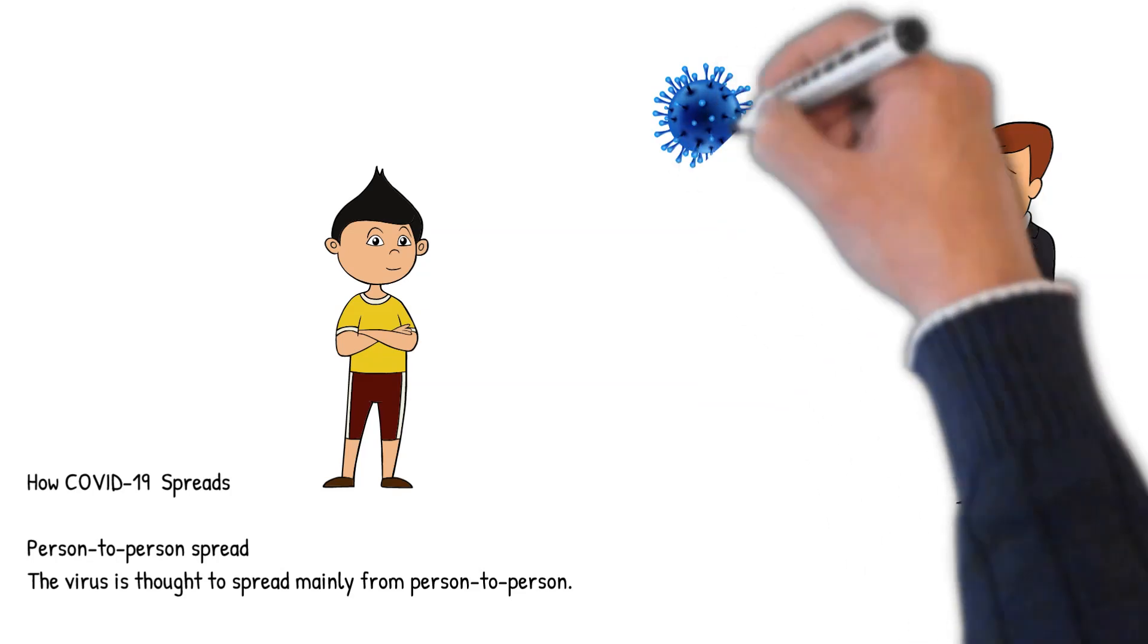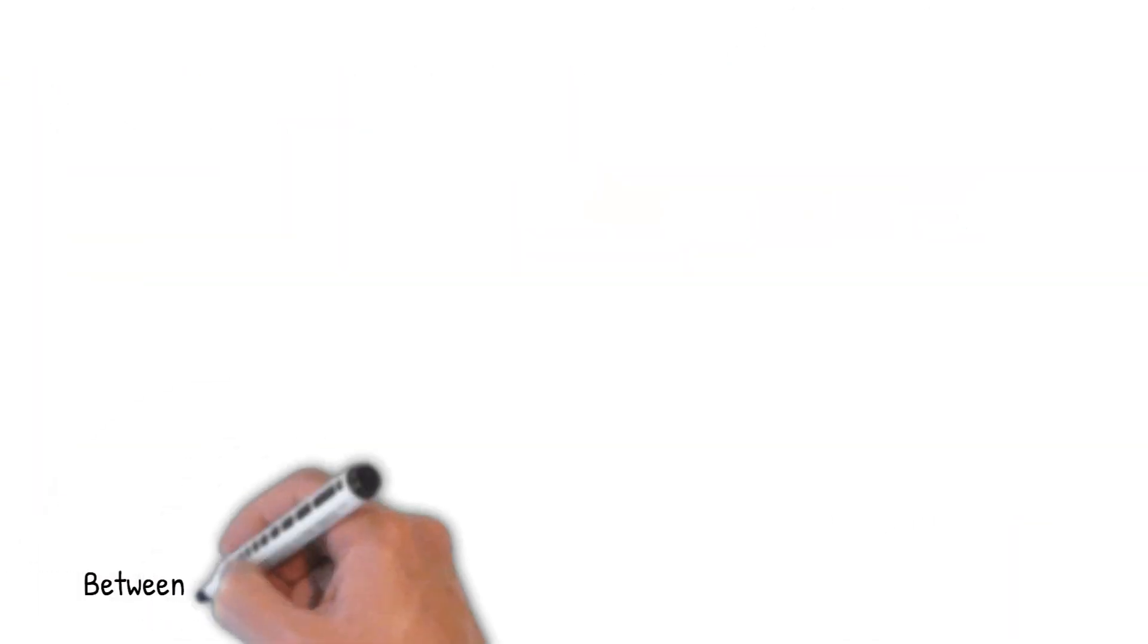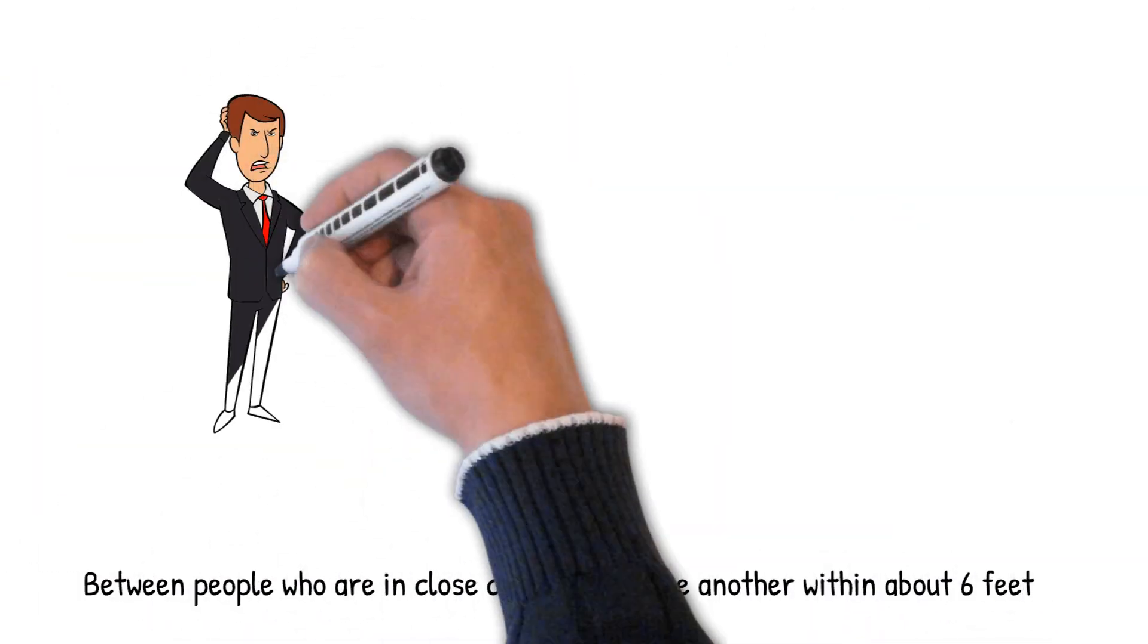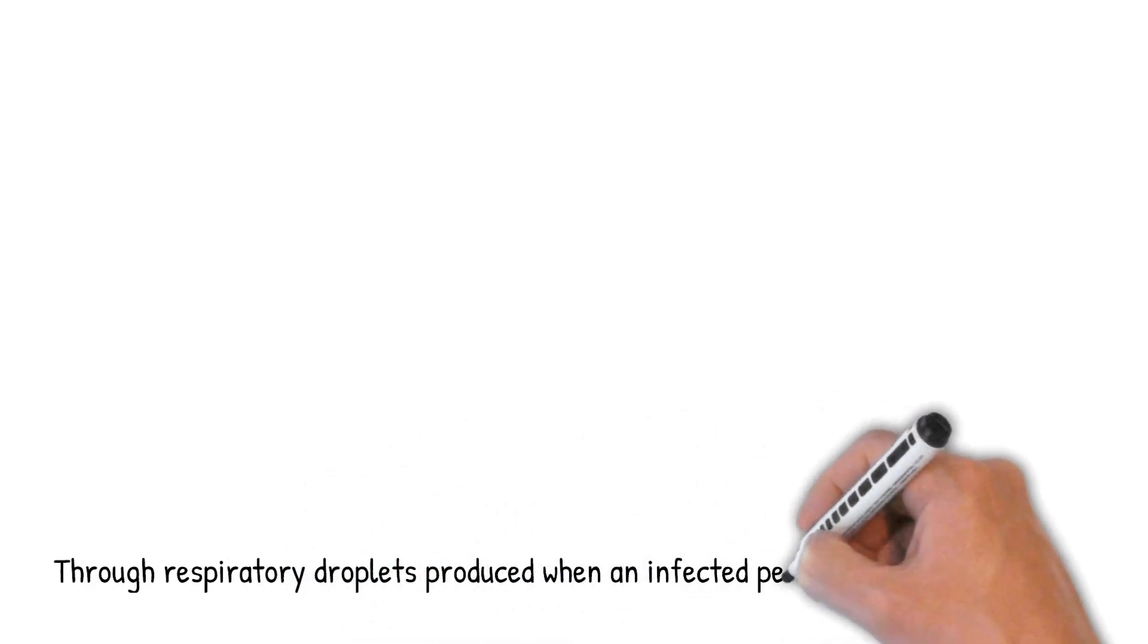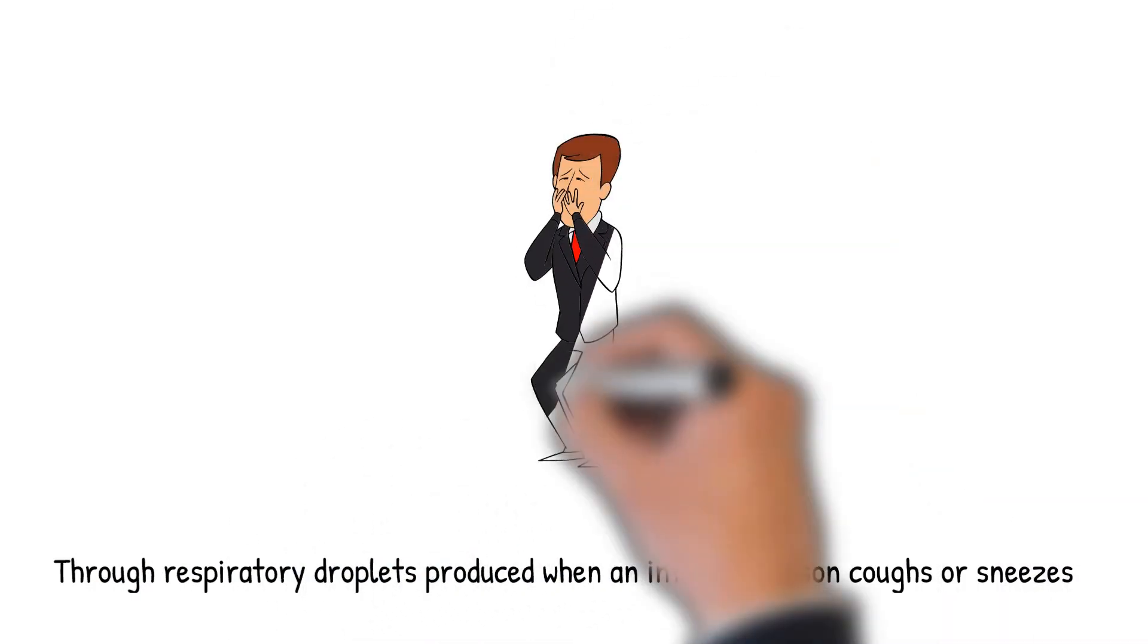The virus is thought to spread mainly from person-to-person between people who are in close contact with one another within about six feet through respiratory droplets produced when an infected person coughs or sneezes.